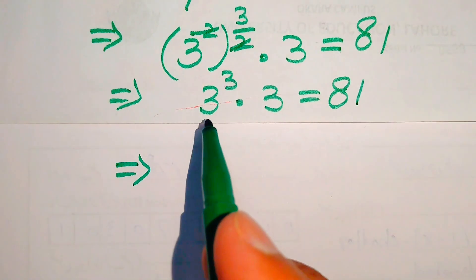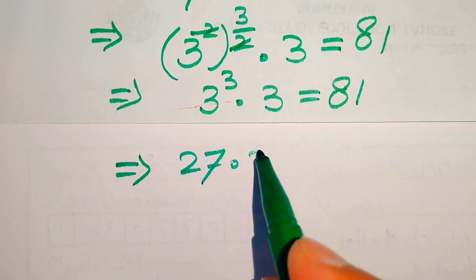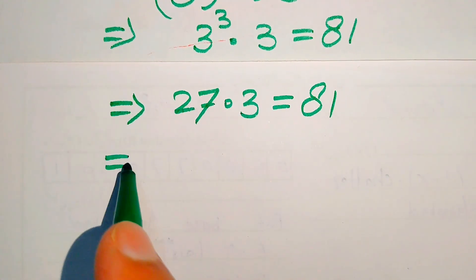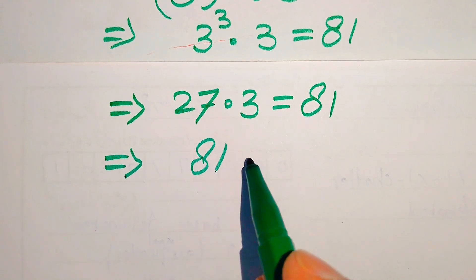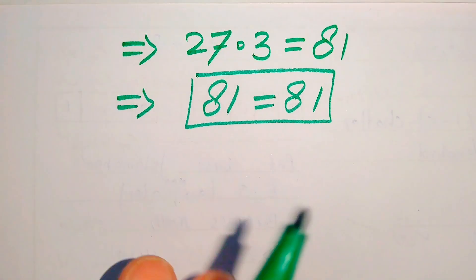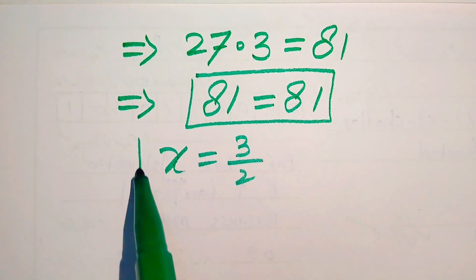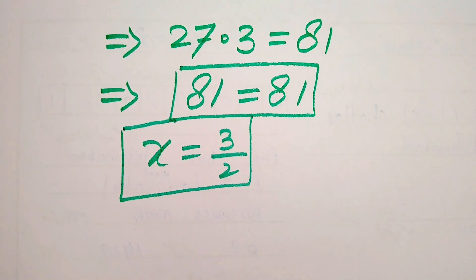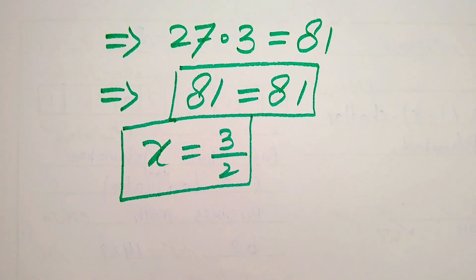We have 3 cubed equals 27, and 27 times 3 equals 81. So 81 equals 81, which confirms that x equals 3 over 2 satisfies the given equation. This is our final answer. The roots that satisfy the given equation are called solutions, and the roots that do not satisfy it are called extraneous roots. Thank you so much for watching this video.